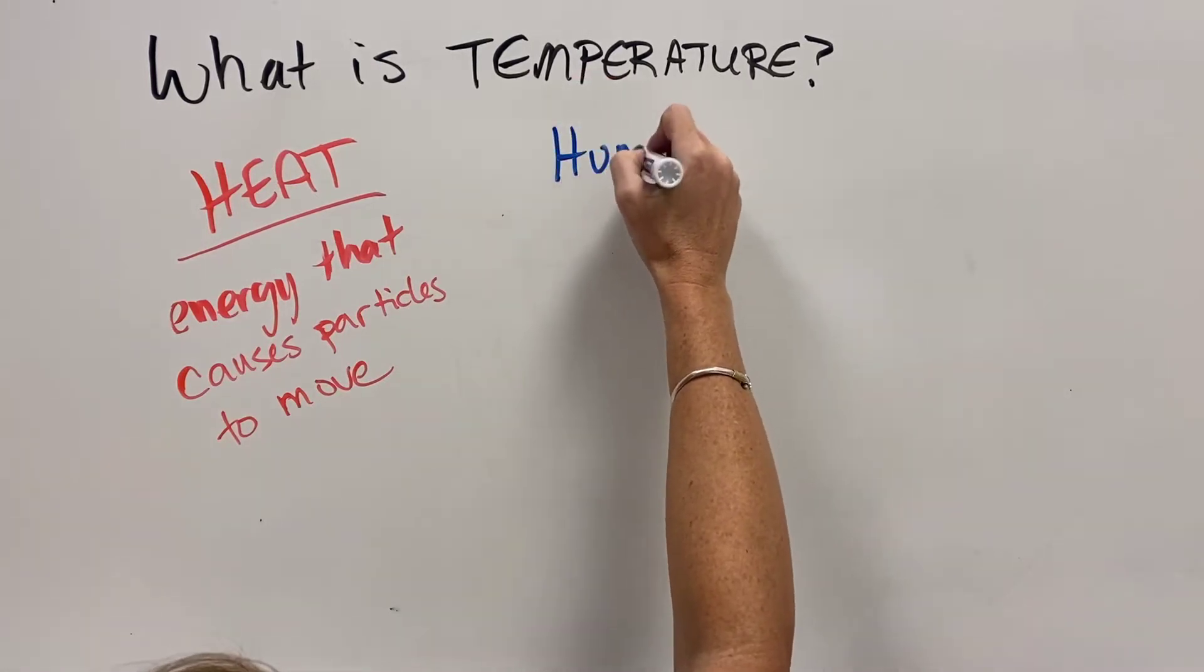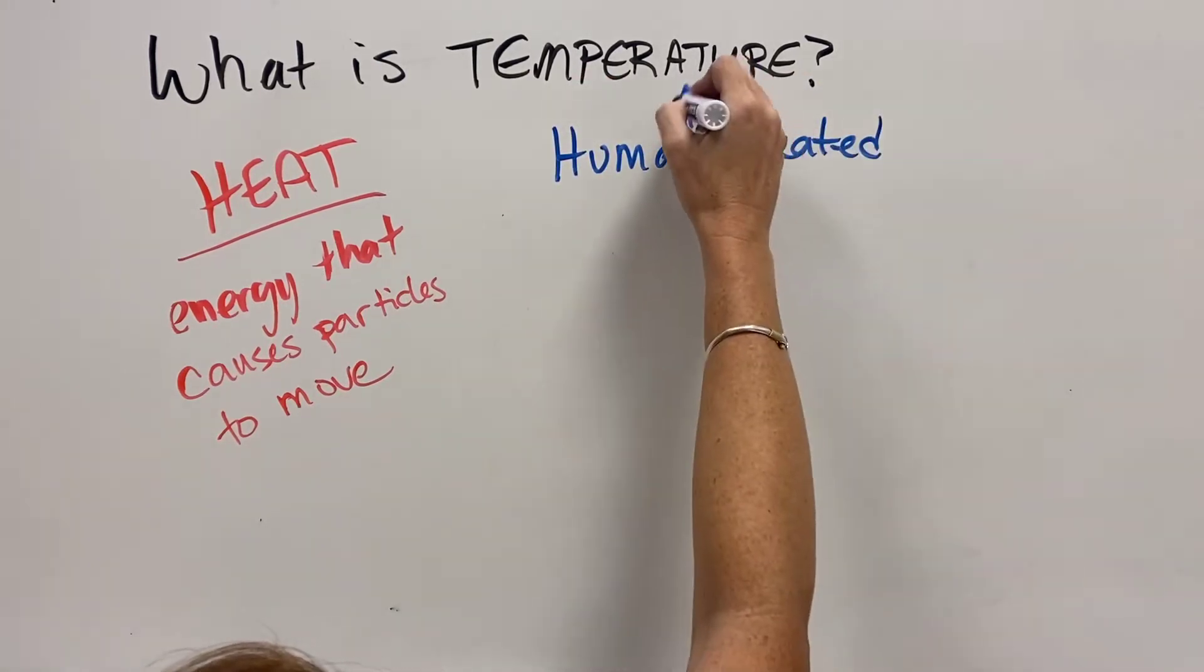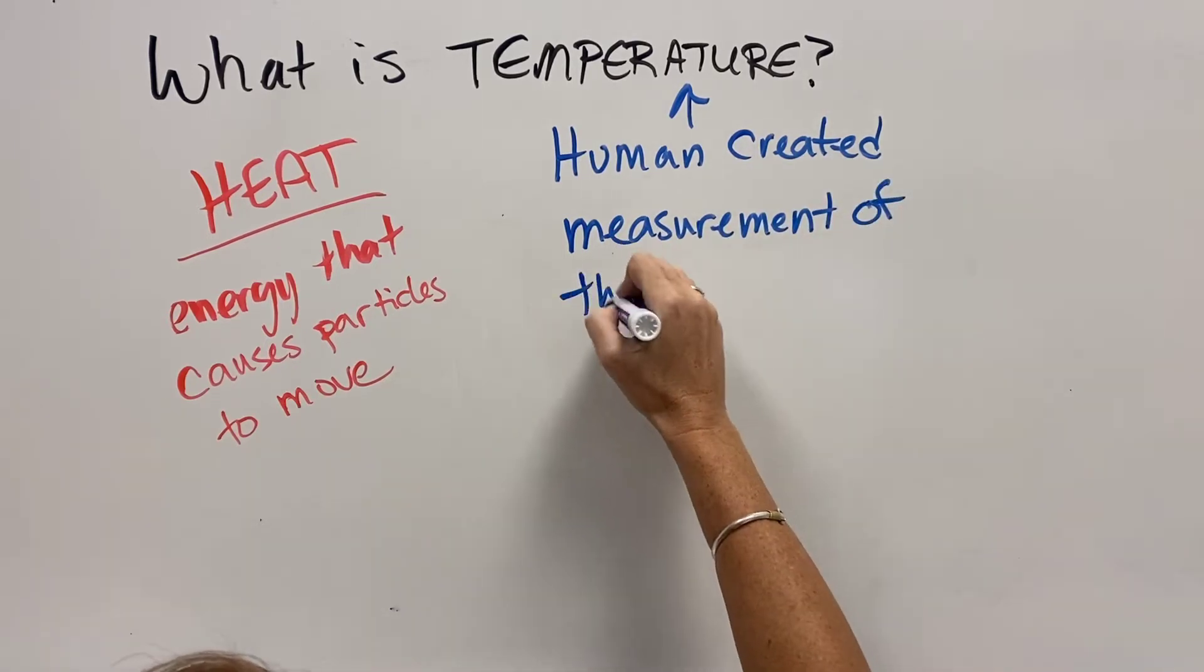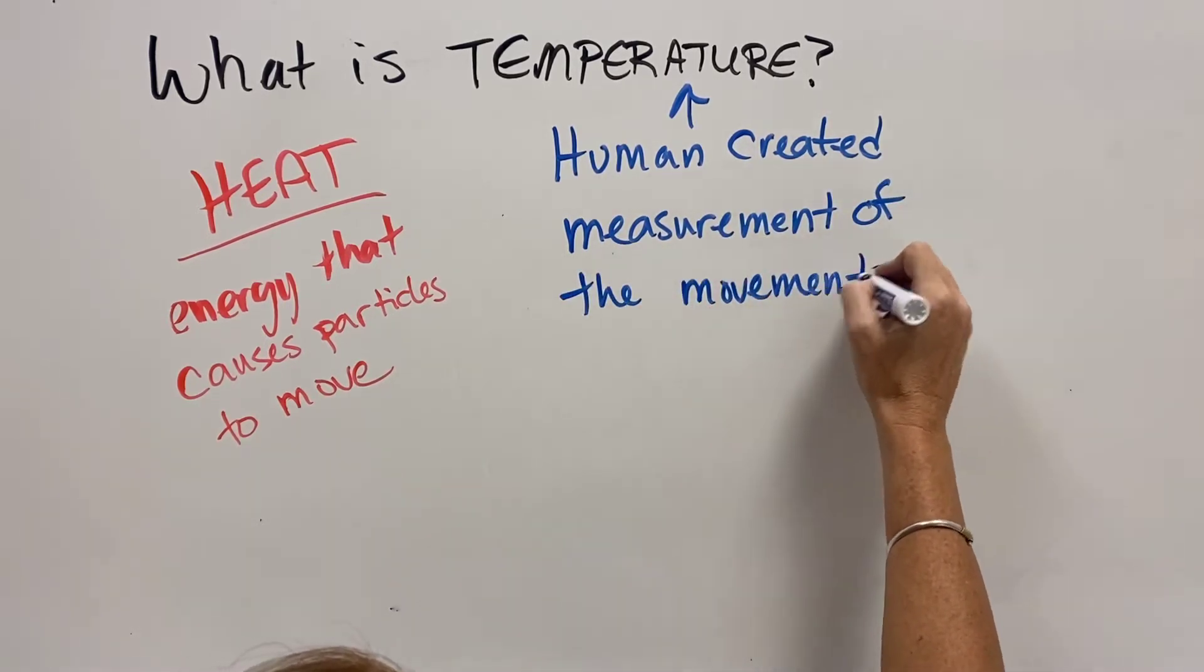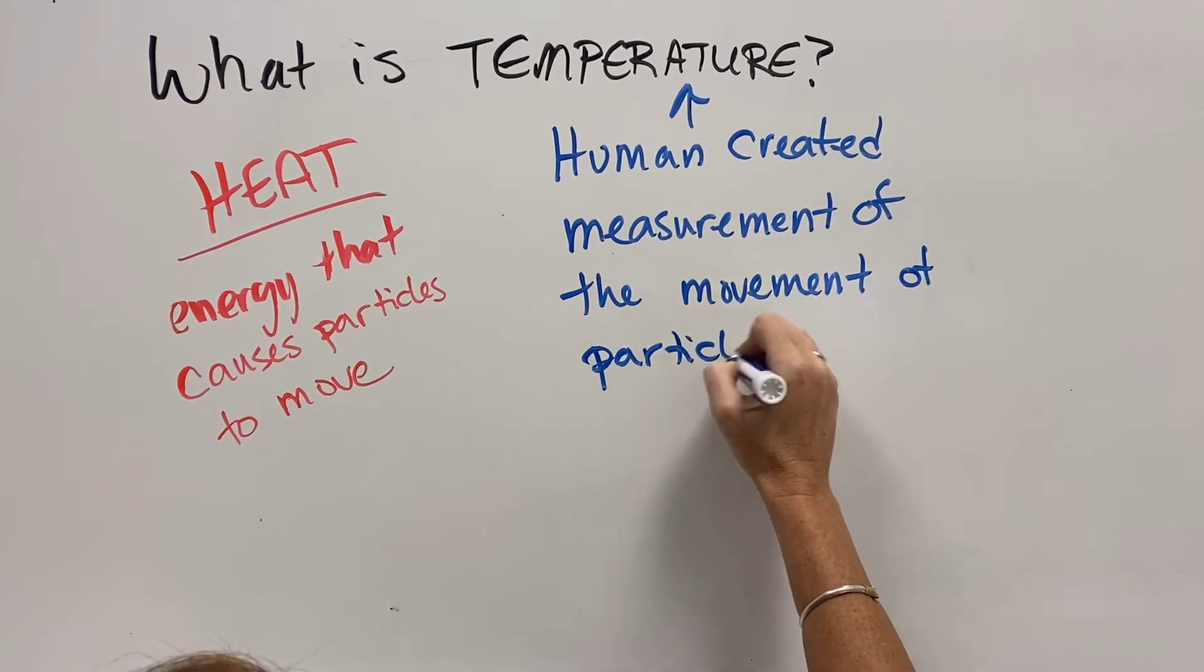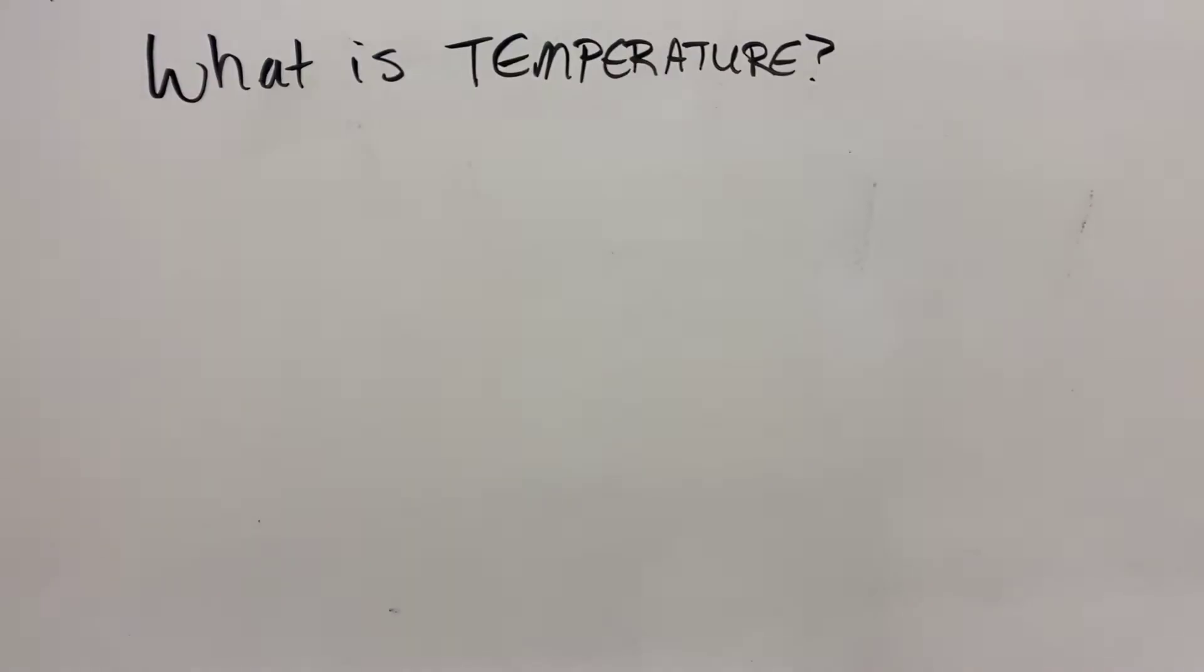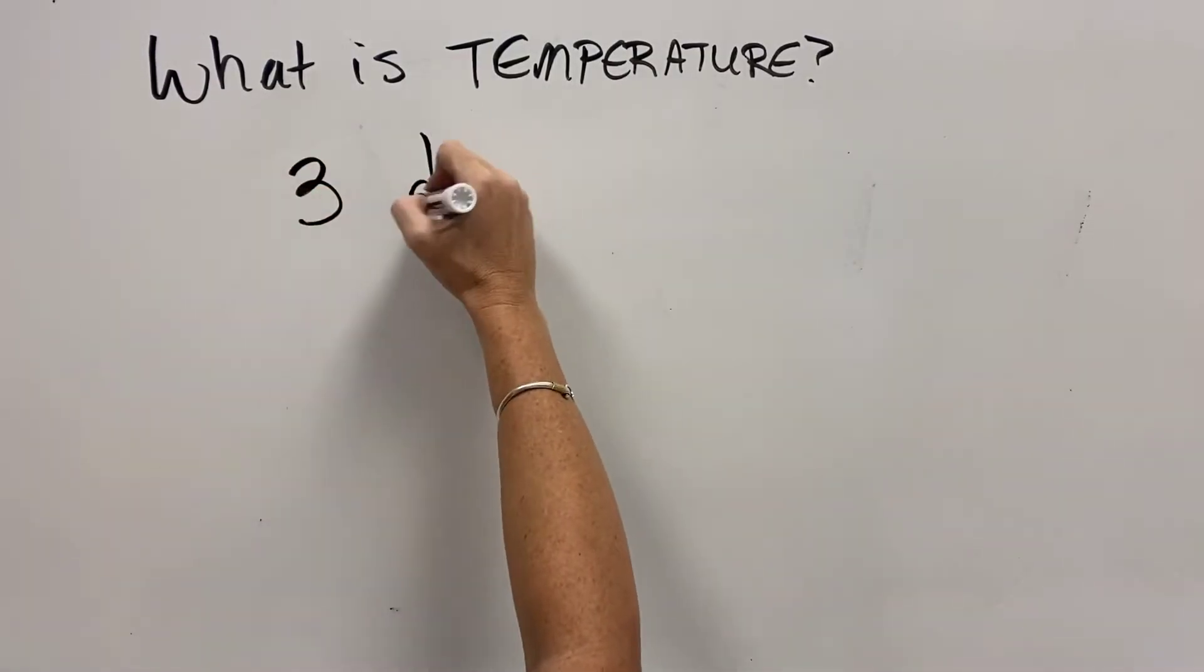The more heat you add, the faster the particles move. Humans created measurement systems to try to get an idea of how fast the particles are moving, and we did that long before we even knew that temperature or heat caused particles to move, and temperature was actually measuring the movement of the particles.